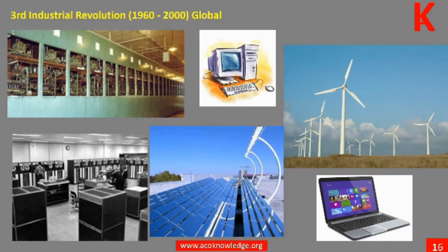Unit 5 analyzes the First Industrial Revolution. It follows the Second Industrial Revolution and a consequent improvement of the quality of life for the masses. The Third Industrial Revolution comes with the computer and the internet.